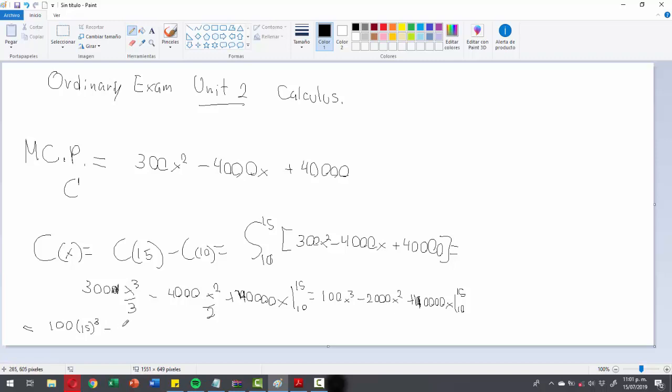Which is 100 times 15 cubed minus 2000 times 15 squared plus 40,000 times 15, minus 100 times 10 cubed minus 2000 times 10 squared plus 40,000 times 10.